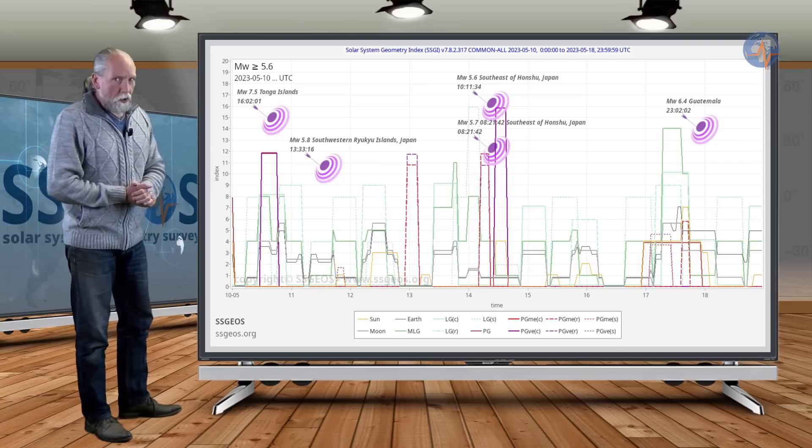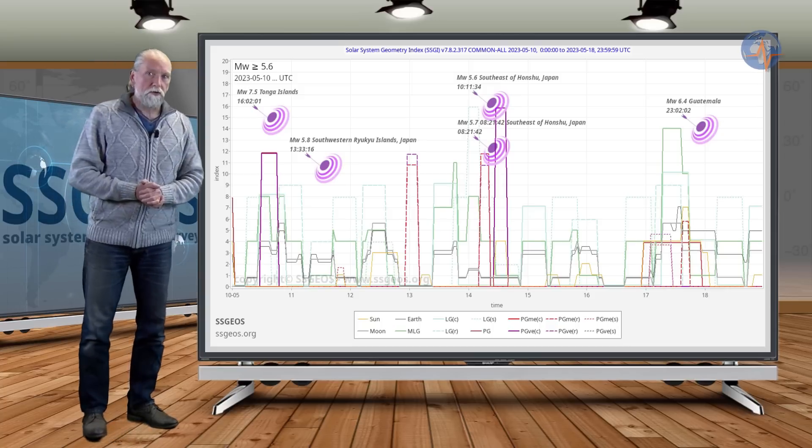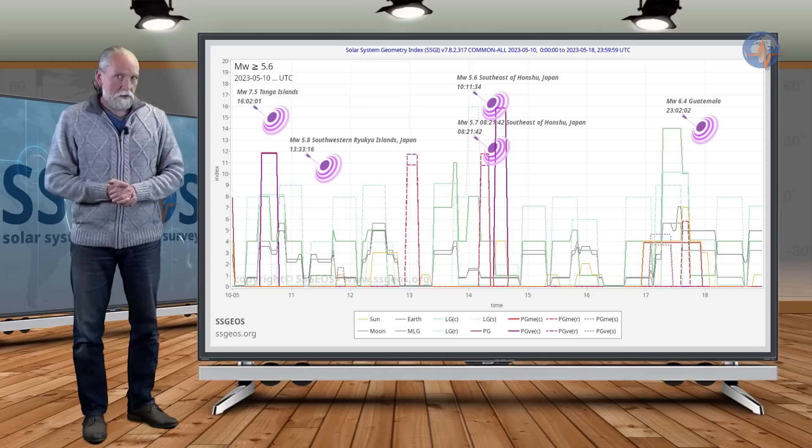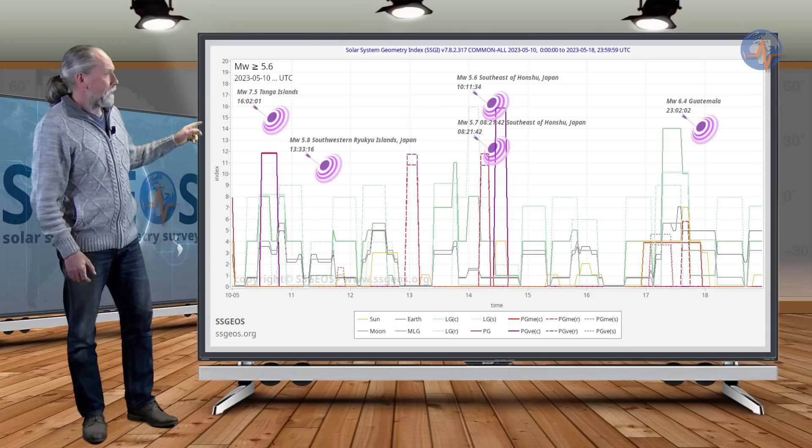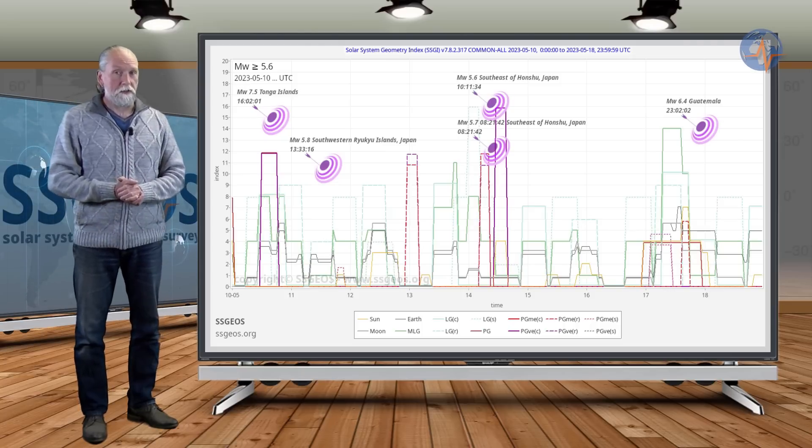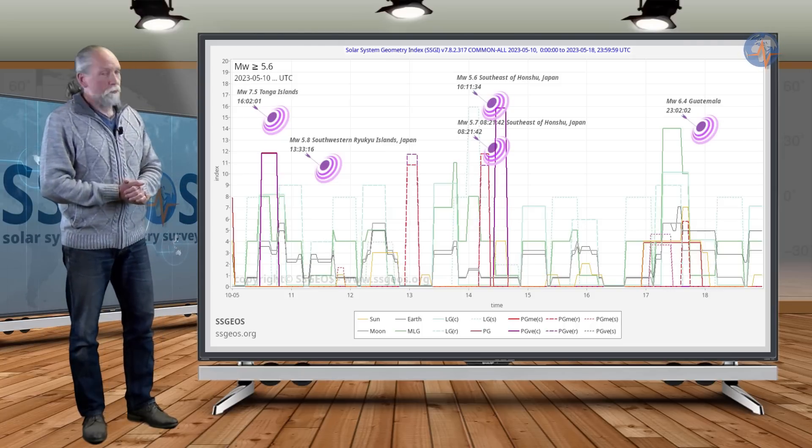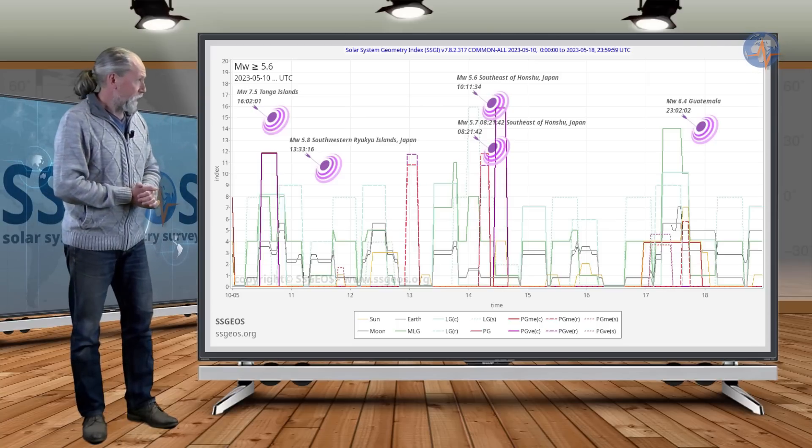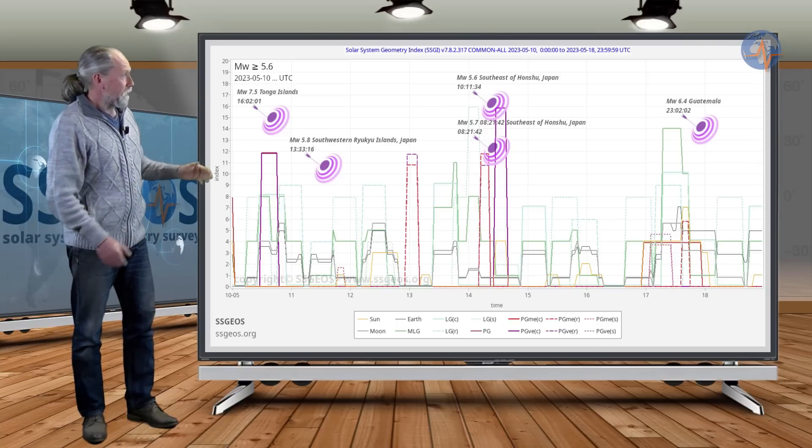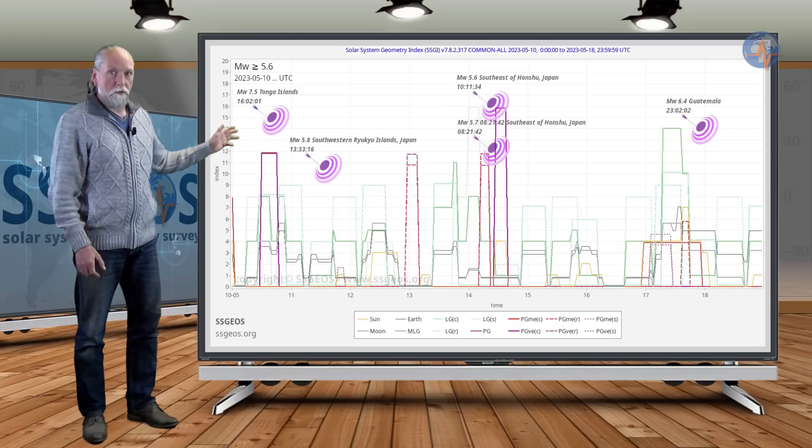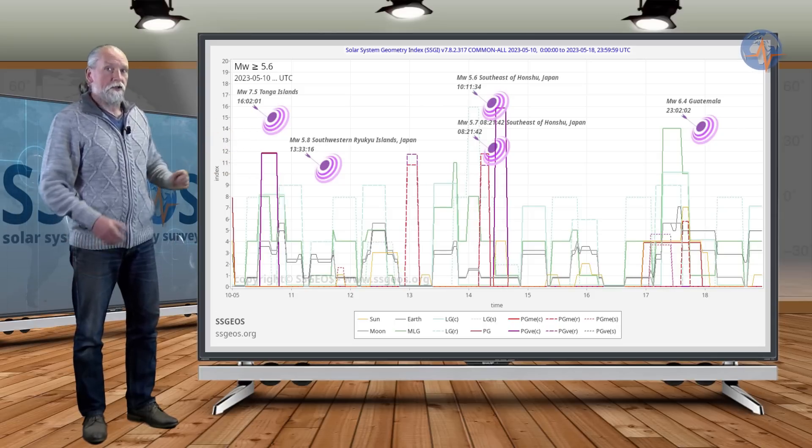There was the potential for another major earthquake, but that did not happen following that planetary geometry. Then with the lunar peak on the 17th that I also mentioned in the previous update, we see a magnitude 6.4 at Guatemala that happened yesterday night. So we see the relationship between the planetary geometry and the larger earthquakes again here on the SSGI graph.